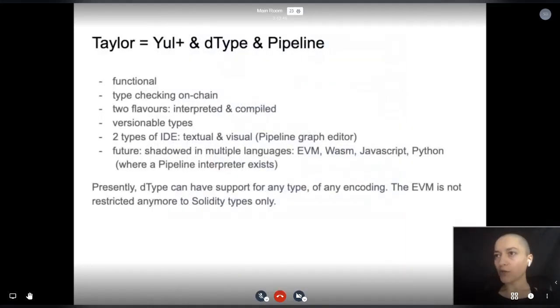Taylor is functional and comes in two flavors: interpreted and compiled. Compiled, where the Yul+ transpiler extension uses on-chain dType data for encoding and decoding, and Pipeline can be used to compose types. In the future, type definitions will be shadowed in multiple languages where a Pipeline interpreter exists.